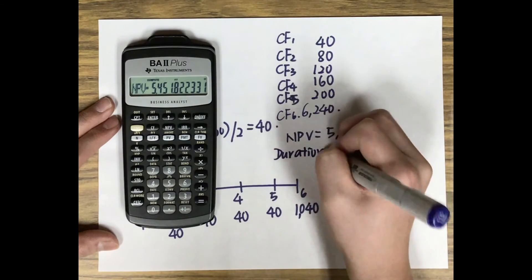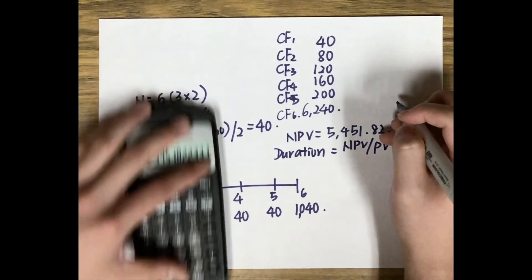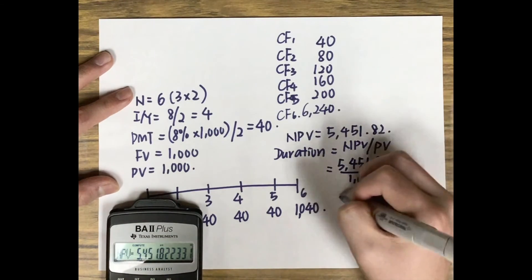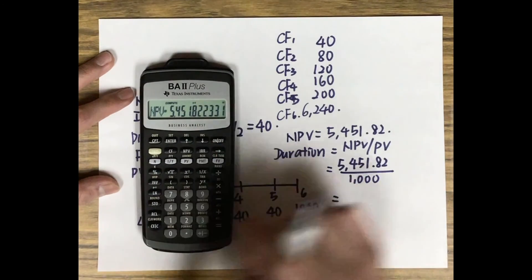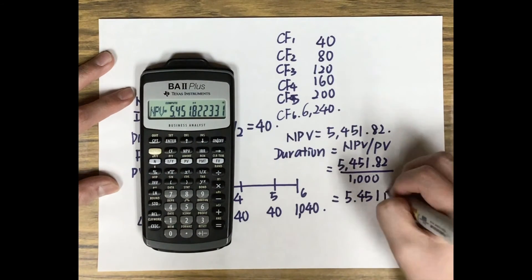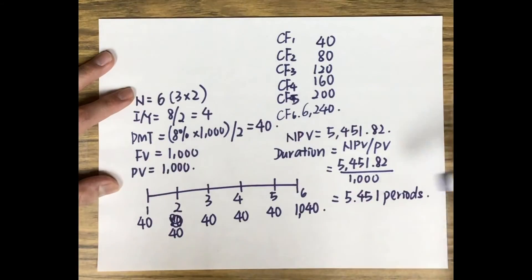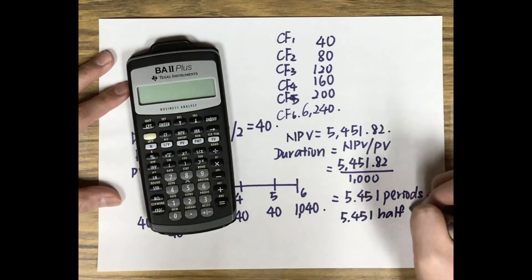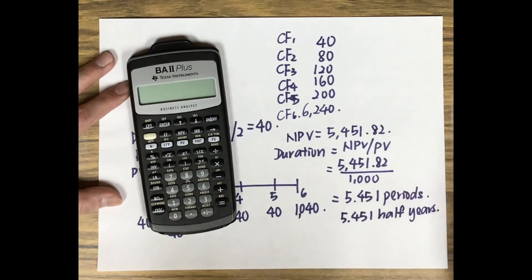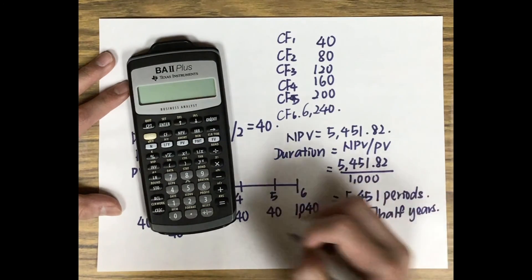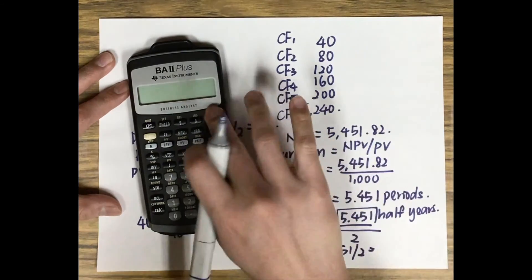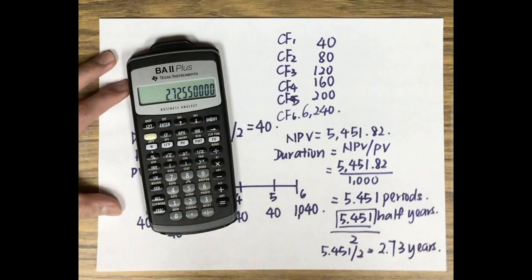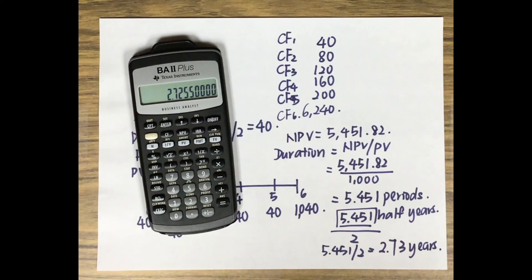To calculate the duration, divide the NPV by the present value: $5,451.82 divided by $1,000 = 5.451 periods. Since this is a semi-annual coupon bond, these are half-year periods, so we divide by 2: 5.451 divided by 2 = approximately 2.73 years. The duration of this semi-annual coupon bond is 2.73 years.